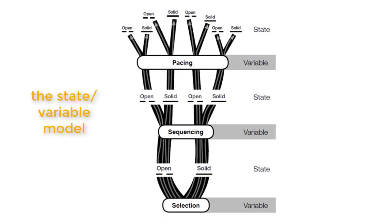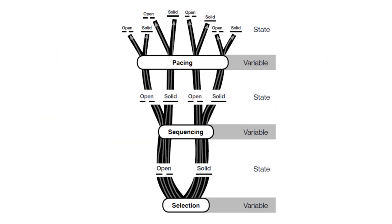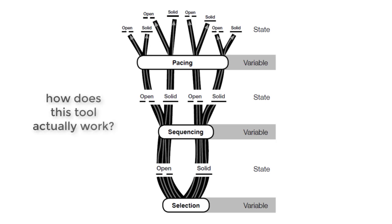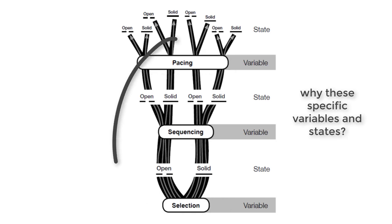Here is the first theoretical tool, the state variable model, in all its glory. I really want to do two things as I take you through how this theoretical tool works: firstly to explain how it works, what its mechanisms are, what its basic functioning is, and how you can understand its basic operating principles. But once I've done that, I want to specify why I've chosen the variables at Selection, Sequencing and Pacing and go on to how they hang together.